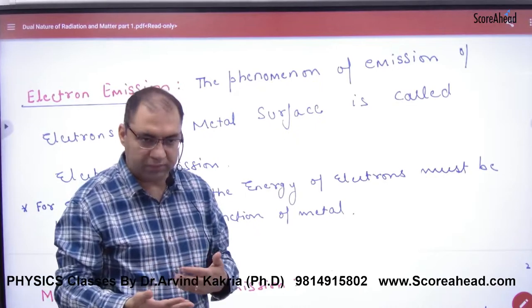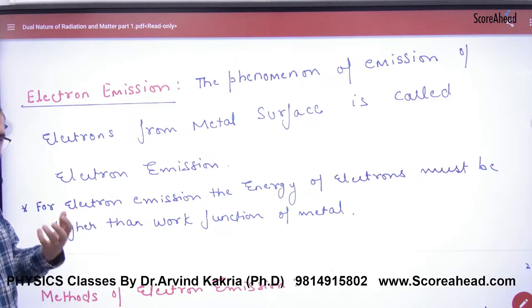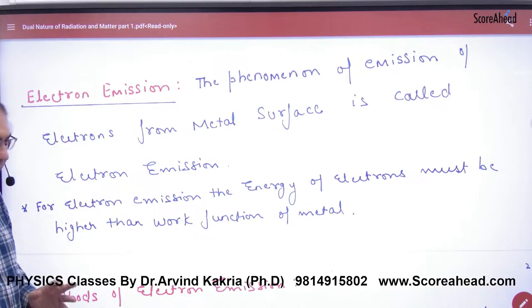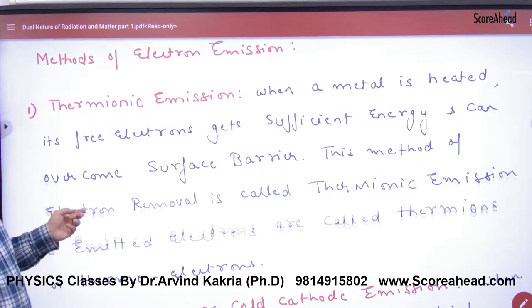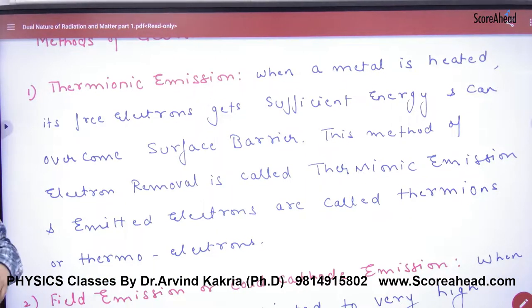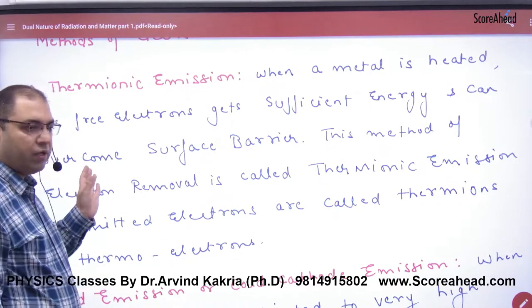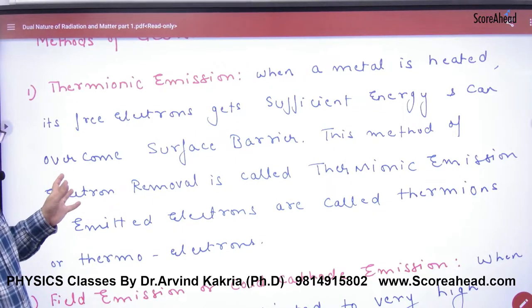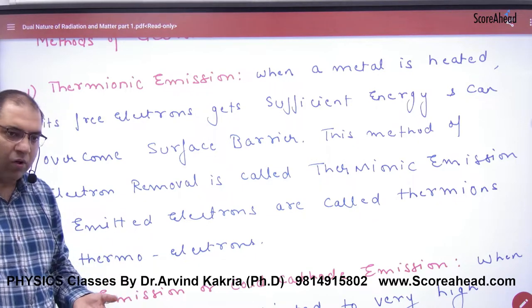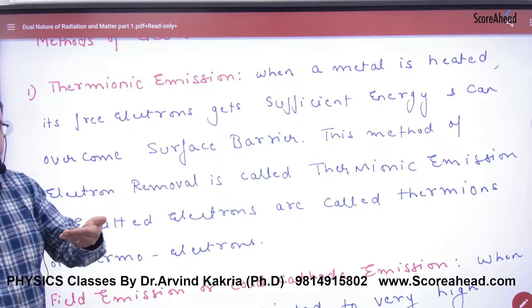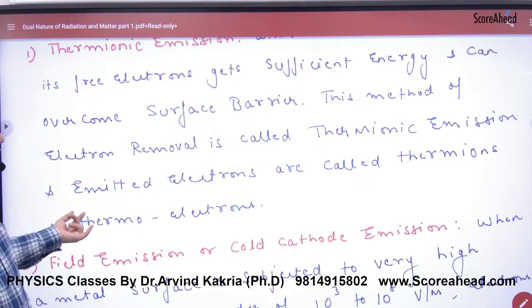There are several methods of electron emission. The first method of electron emission is thermionic emission. 'Thermo' relates to heat. When a metal is heated, its free electrons gain sufficient energy and can overcome the surface barrier. So when you heat the metal, electrons gain so much energy that they leave the surface and go out.